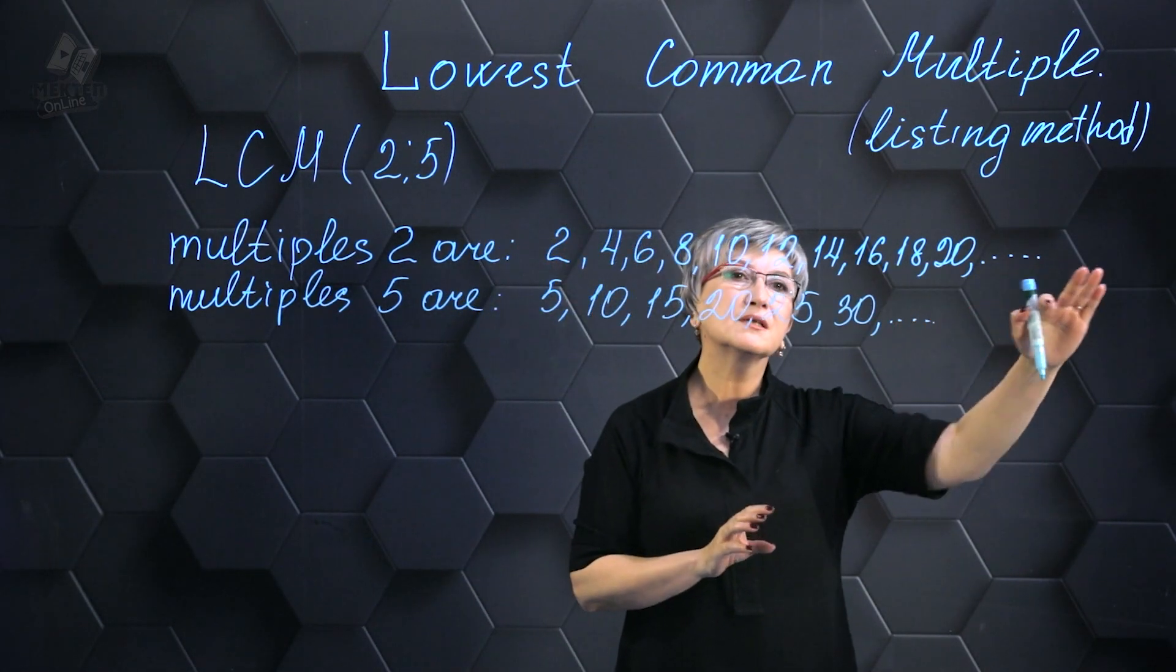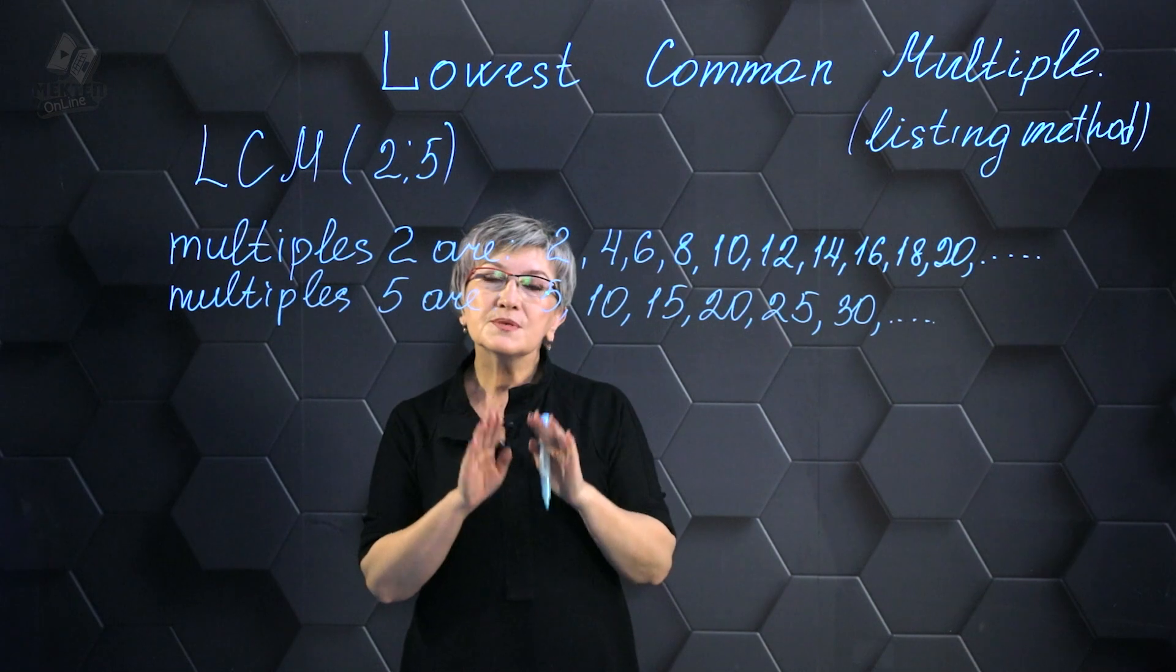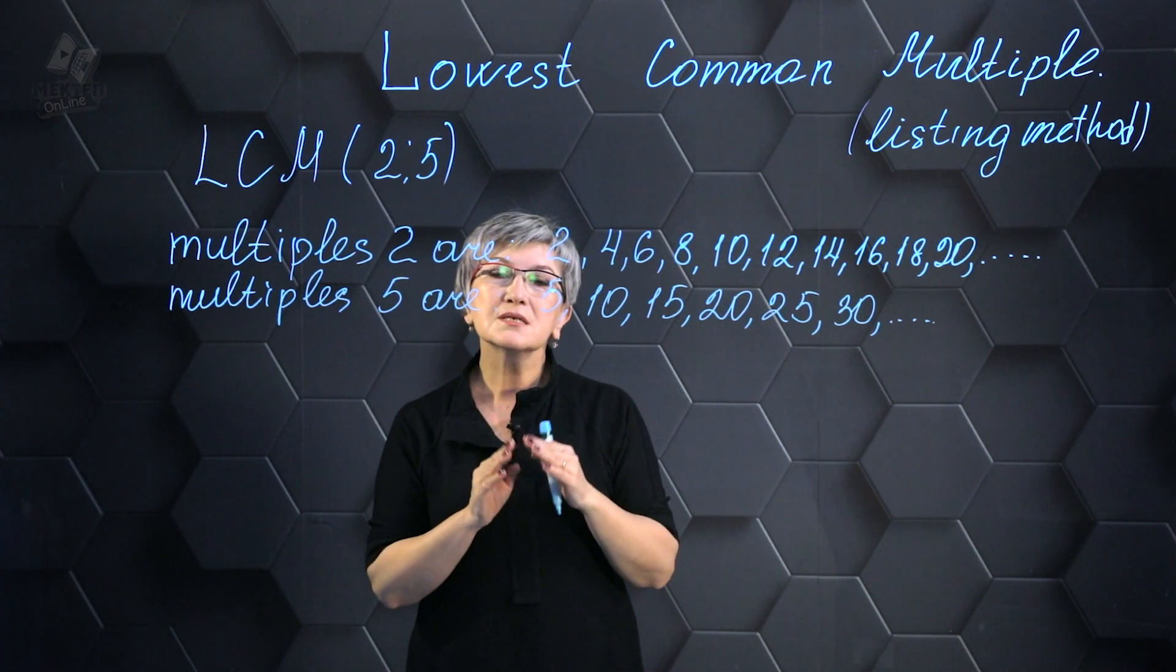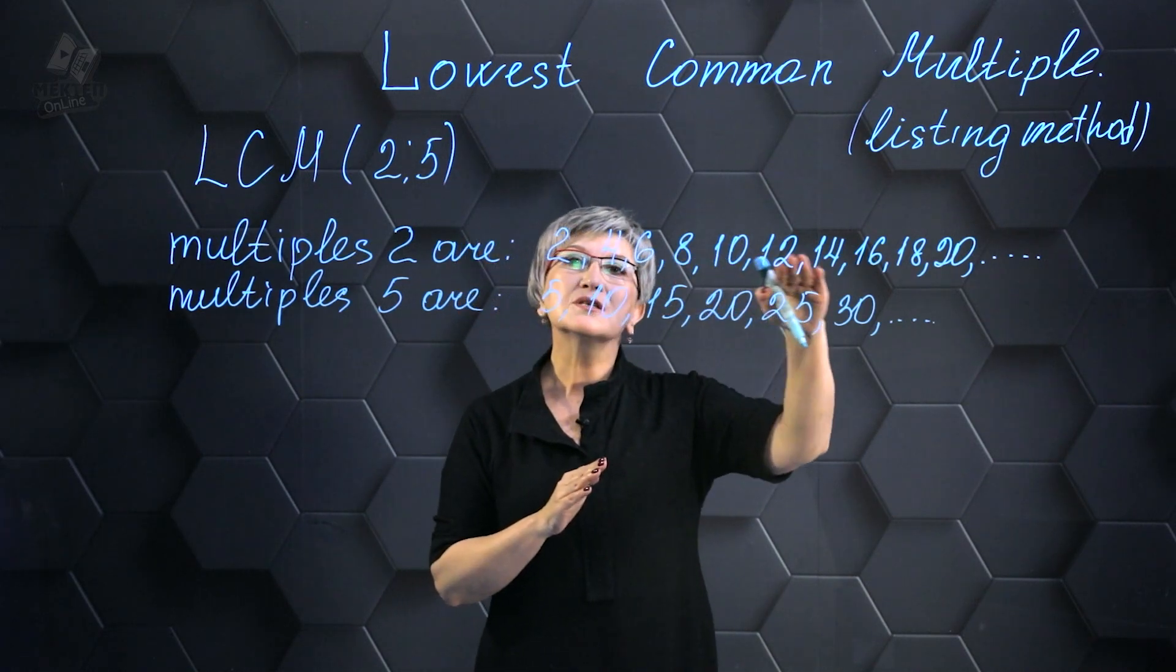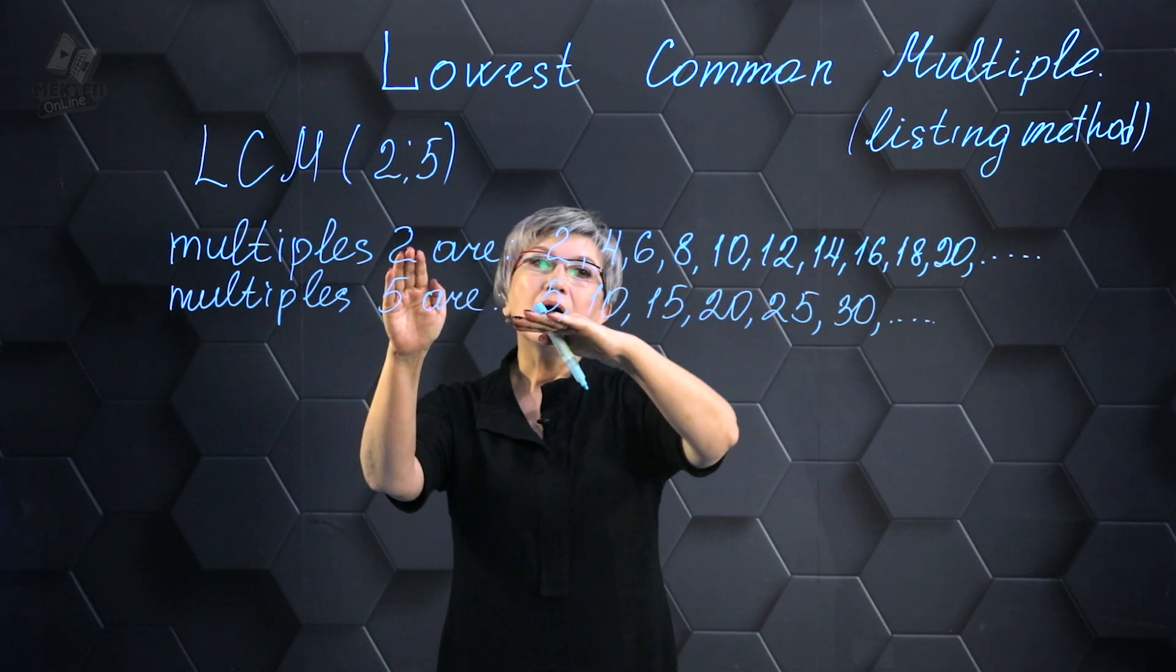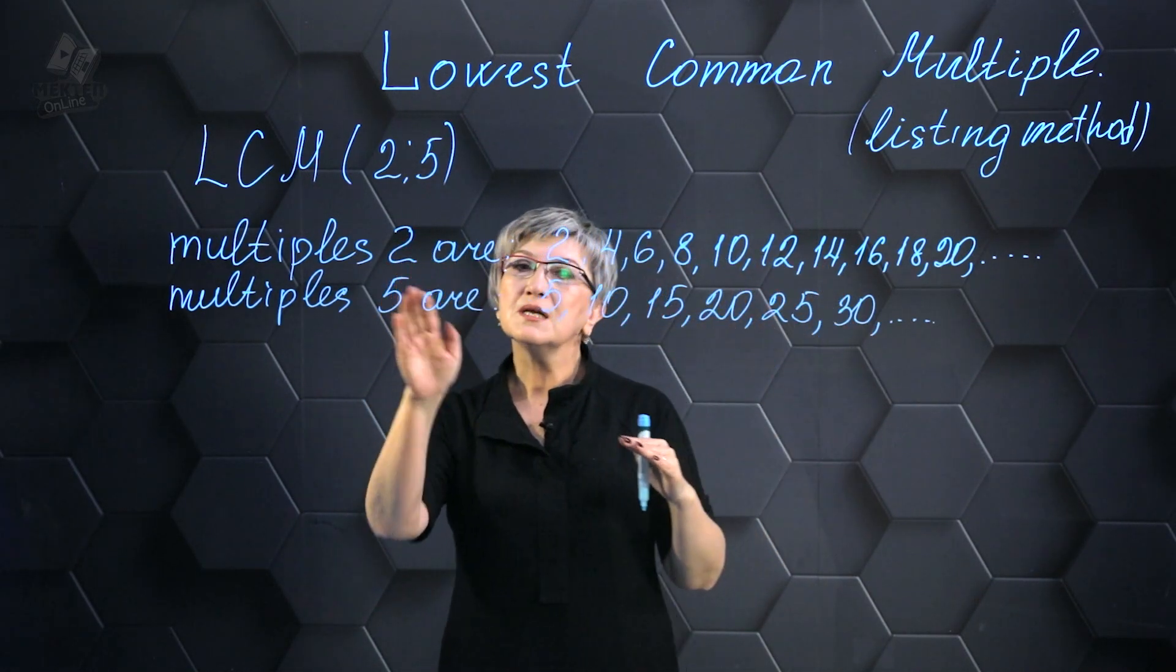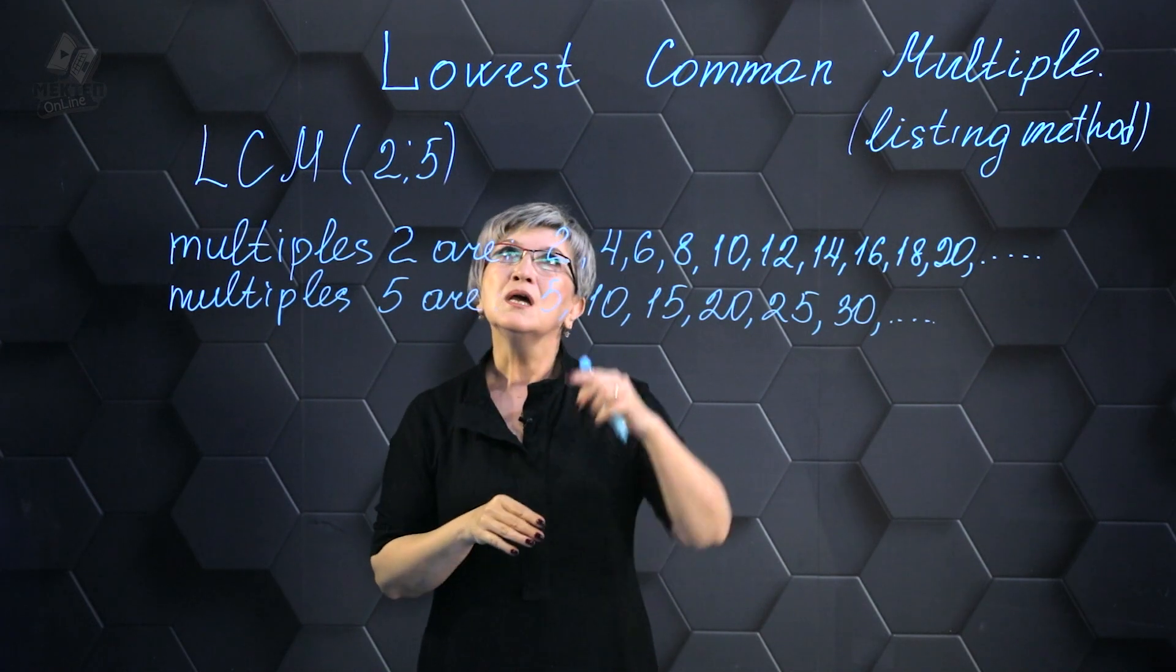I cannot write the largest number that is divisible by 2 or the largest number that is divisible by 5 because all these numbers continue infinitely. All these numbers are divisible by 2, and all numbers in the bottom line are divisible by 5.